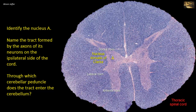Neurons in this nucleus give rise to axons that ascend the cord in the ipsilateral dorsal spinocerebellar tract. The dorsal spinocerebellar tract, formed by the axons of the cells of this nucleus, enters the cerebellum through the inferior cerebellar peduncle.